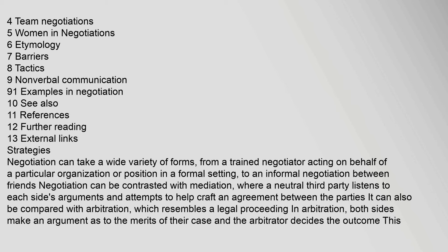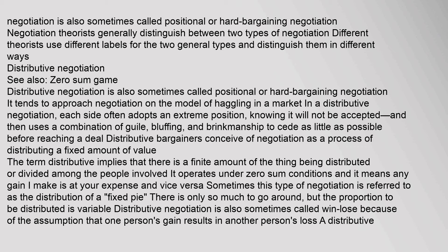Negotiation can take a wide variety of forms, from a trained negotiator acting on behalf of a particular organization or position in a formal setting, to an informal negotiation between friends. Negotiation can be contrasted with mediation, where a neutral third party listens to each side's arguments and attempts to help craft an agreement. It can also be compared with arbitration, which resembles a legal proceeding where both sides make an argument as to the merits of their case and the arbitrator decides the outcome. Negotiation theorists generally distinguish between two types of negotiation.